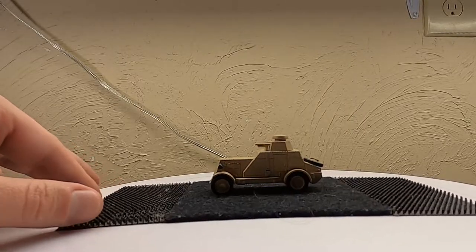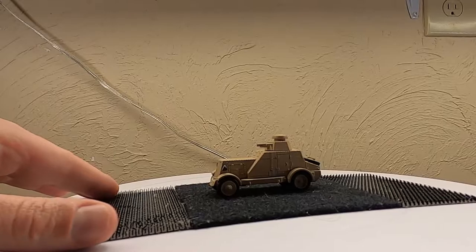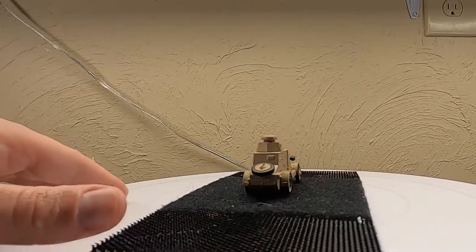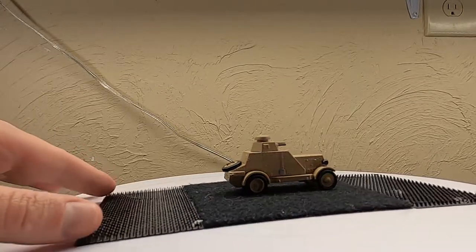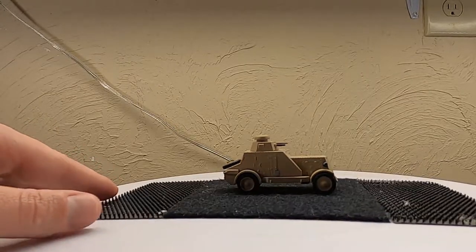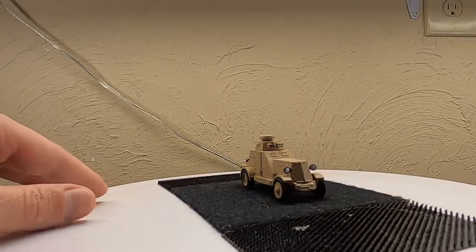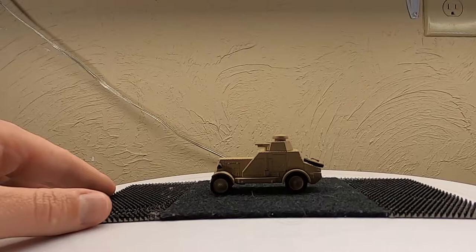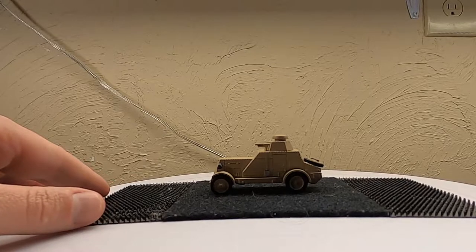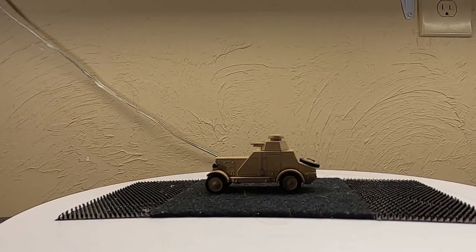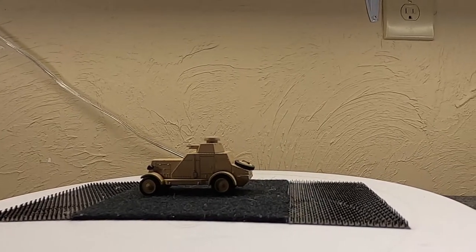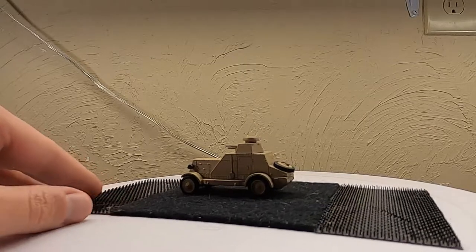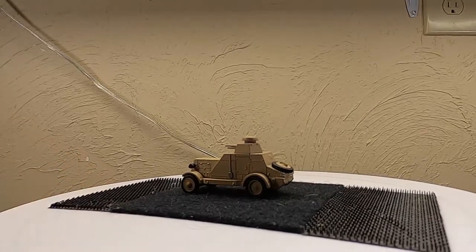So the design was pretty much finalized in 1927, hence kind of the 27 in the name, and would enter into Red Army trials the next year, being accepted in 1929 and orders placed. They would only make a few of these, about 215, and production would run from 1928 through 1931 when it would be replaced by other vehicles.